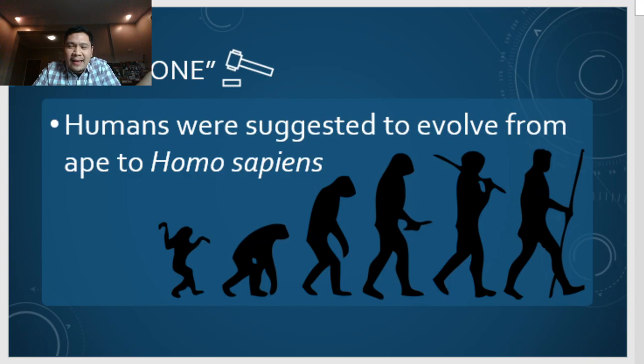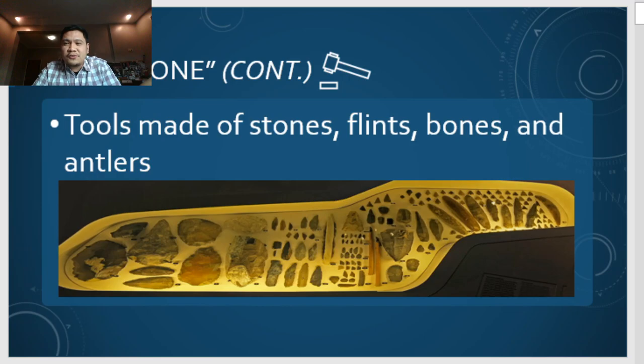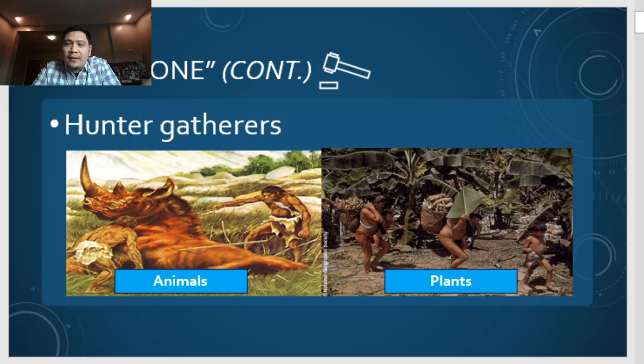Tools were made of stones, flints, bones of animals, and antlers. Individuals were considered as hunter-gatherers — hunters who hunt animals and gatherers who gather food, vegetables, fruits, or herbs. Also under the Old Stone period, they used to live in small bands — groups of individuals living together — because more individuals meant more people to gather resources.